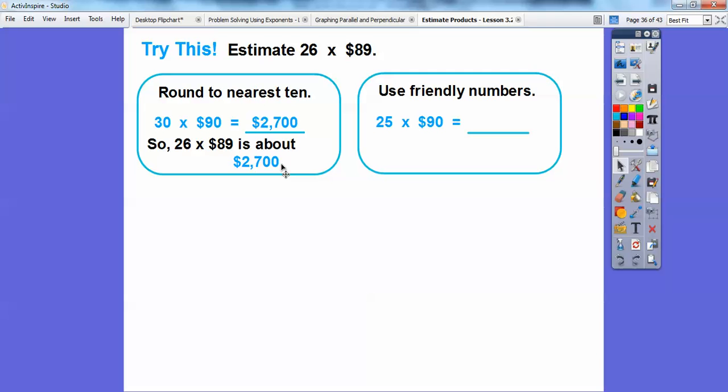So one way we can, one estimate is 26 times 89 is going to be about 2,700 right there. Do you think it's going to be less or more? Well, since 30 is greater than 26 and 90 is greater than 89, then this product is going to be a little bit more than what the actual answer is right there. But it did say estimate, so that's a good estimate right there. So we're going to use friendly numbers here. 25 times 90, well, we'll first do 25 times 9, and then add a zero.